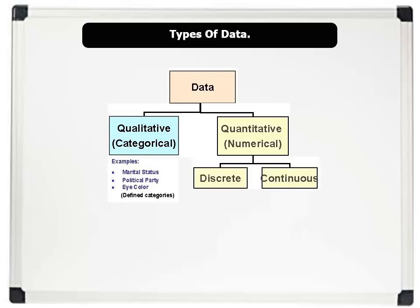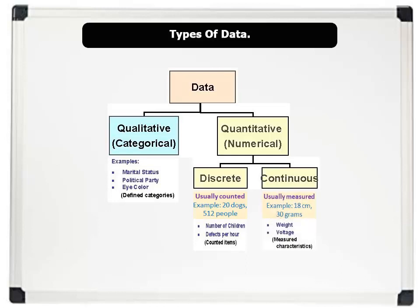Discrete data are usually counted. Examples include 20 dogs, number of children, etc. While continuous data are usually measured. Examples include weight, voltage, etc. That's very good.